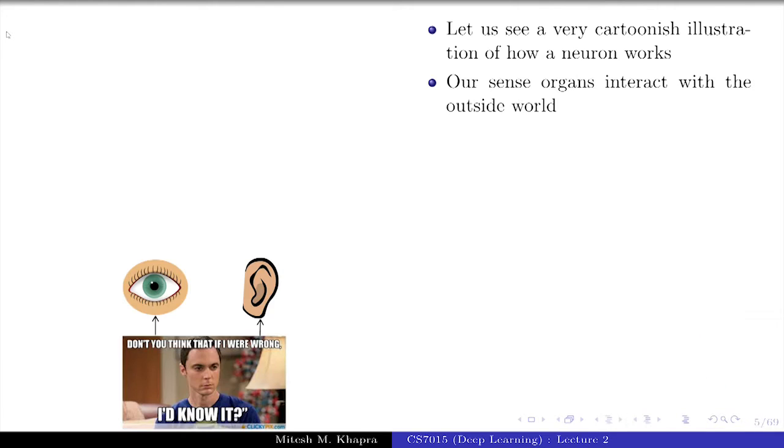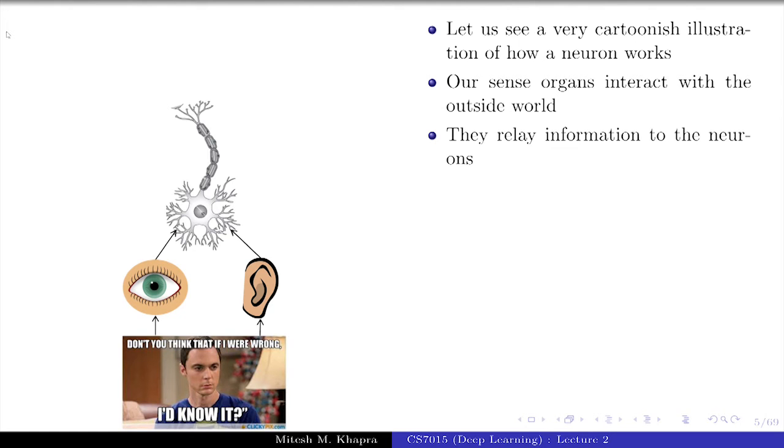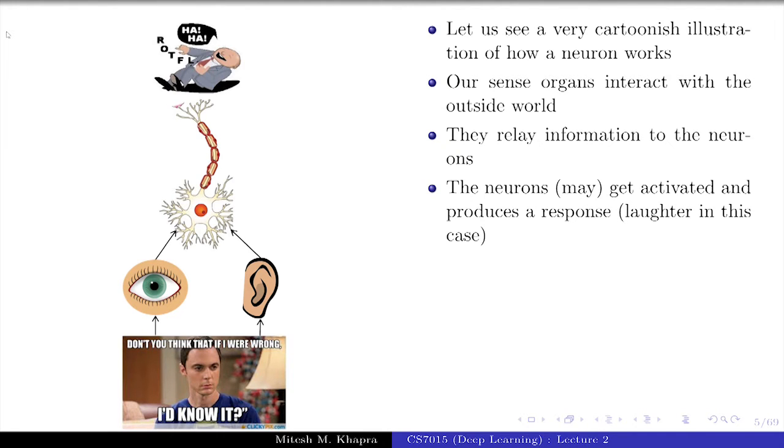Let us see a very cartoonish illustration of how this works, how the neuron works. Our sense organs interact with the outside world and then they pass on this information to the neuron, and then the neuron decides whether I need to take some action. In this case, the action could be whether I should laugh or not. Whether the input is really funny enough to evoke laughter. If that happens, this is known as something that the neuron has fired.